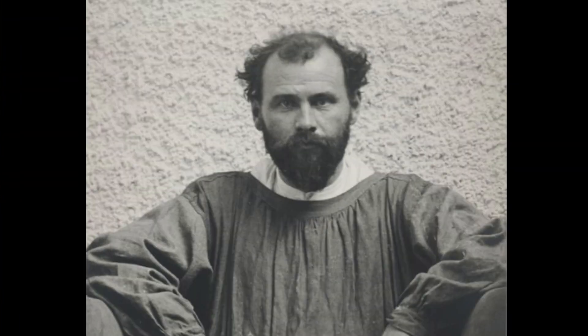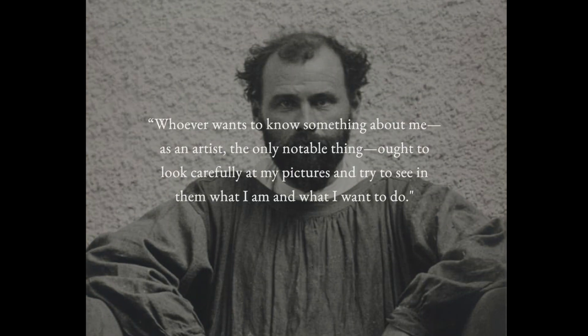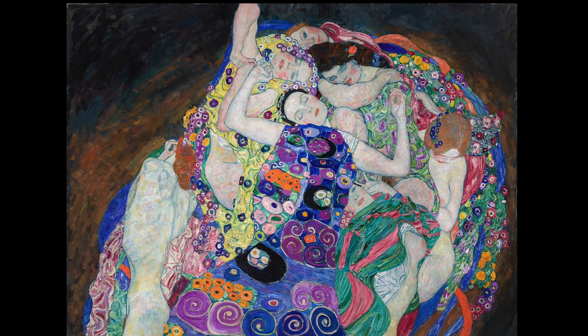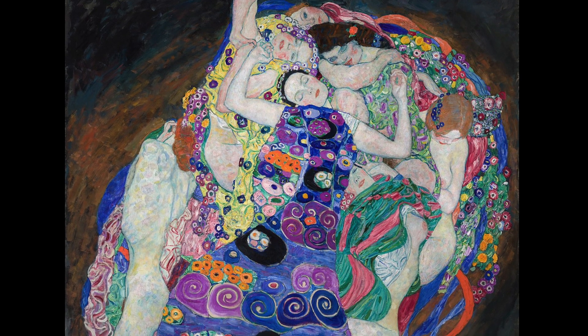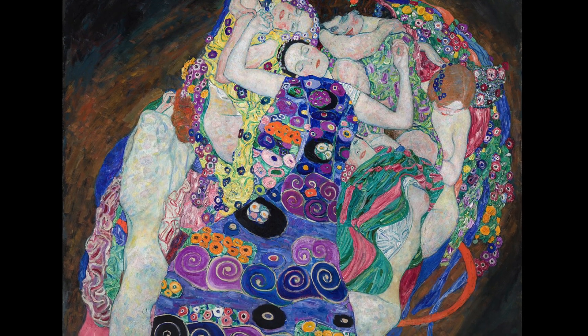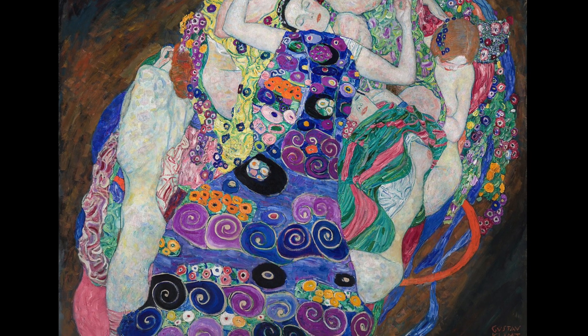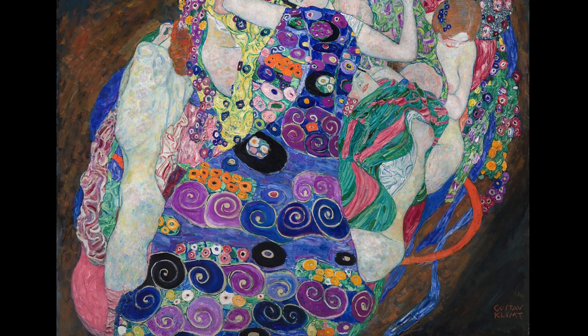Klimt was a deeply private character who chose to speak through his work rather than his voice, stating: 'Whoever wants to know something about me as an artist, the only notable thing, ought to look carefully at my pictures and try to see in them what I am and what I want to do.' His visual style is so strong, so full of expressive colors, movements swirling and spiraling, that it hides the strange composition from which it is conceived.